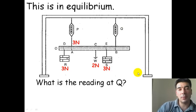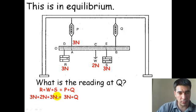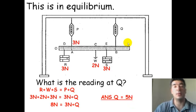So I could write a simple equation. The force of R, W, and S should add up to P and Q. If I substitute the numbers in, 3, 2, and 3, should be equal to 3 plus the force of Q. Simplify it a bit. Subtract 3 from both sides now, and we get the answer 5 newtons. The reading here would be 5 newtons. I'll give you an example question to do a little bit later in the presentation.